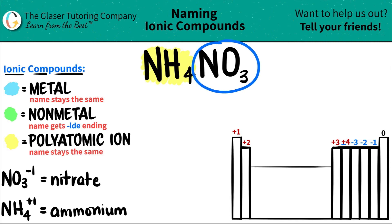But then I look at this NO3, and I say, that's also a polyatomic. NO3 minus one is always called nitrate.